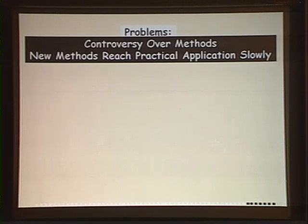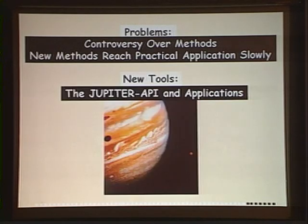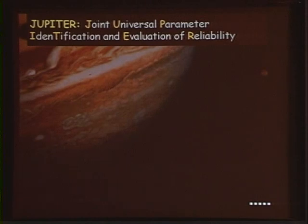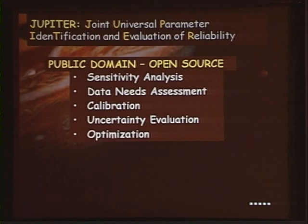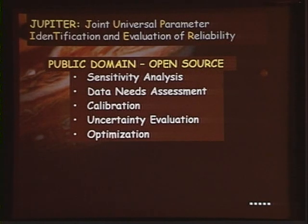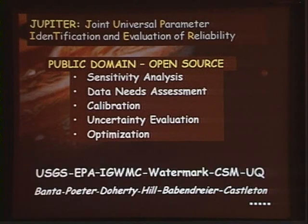There is controversy over which methods are appropriate and new methods are slow to reach practitioners. I've been working on tools called the JUPITER API and associated applications to address this. JUPITER stands for Joint Universal Parameter Identification and Evaluation of Reliability. It is public domain open source code — JUPITER itself does not make computations; it provides modules for programmers developing codes for sensitivity analysis, data needs assessment, calibration, uncertainty evaluation, and optimization.